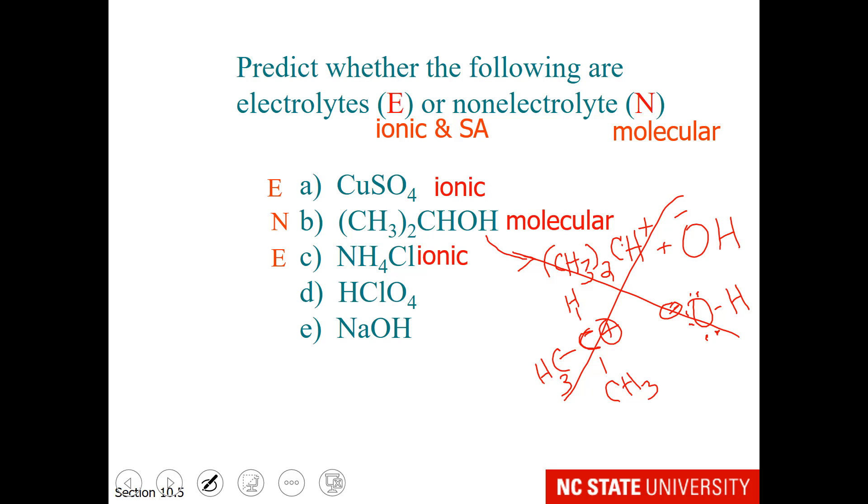How about D? That is a strong acid. That is perchloric acid. So when we dissolve that in water, it will make hydronium and the perchlorate ion. This is an electrolyte.